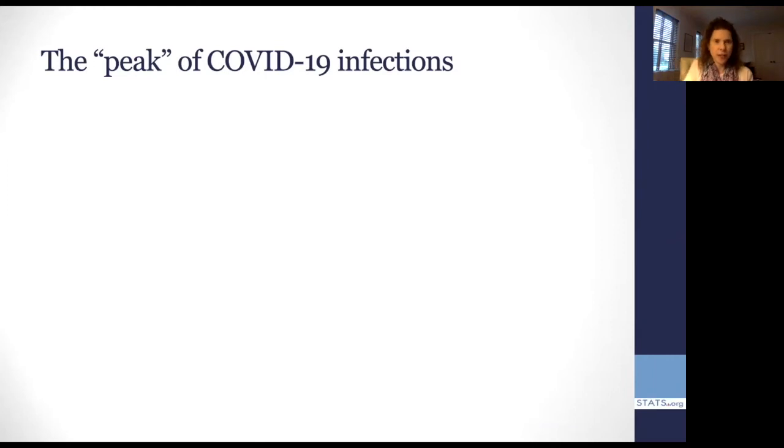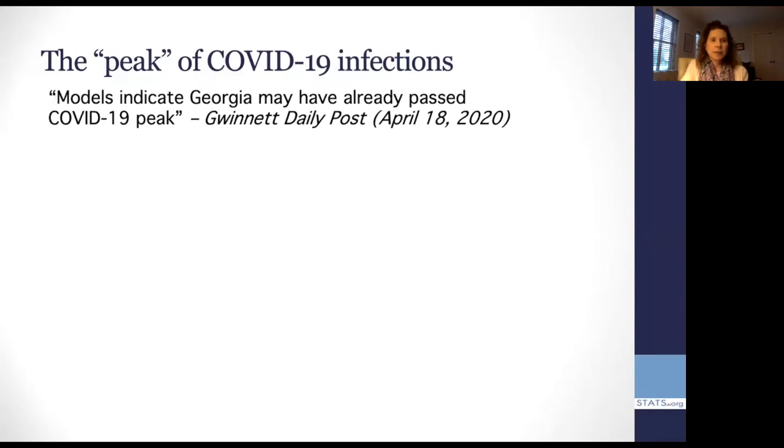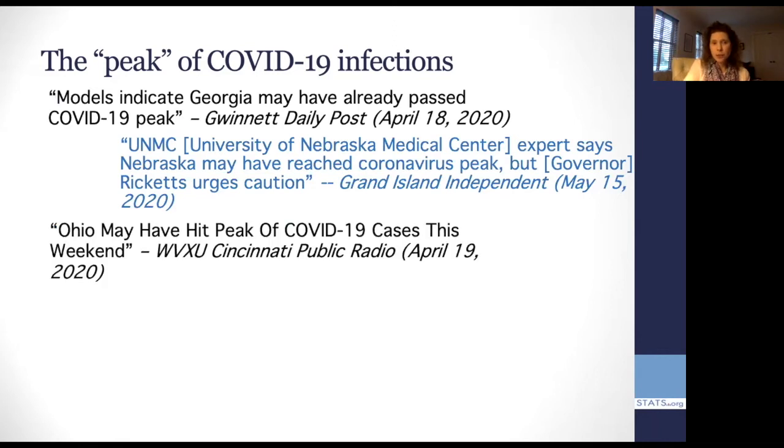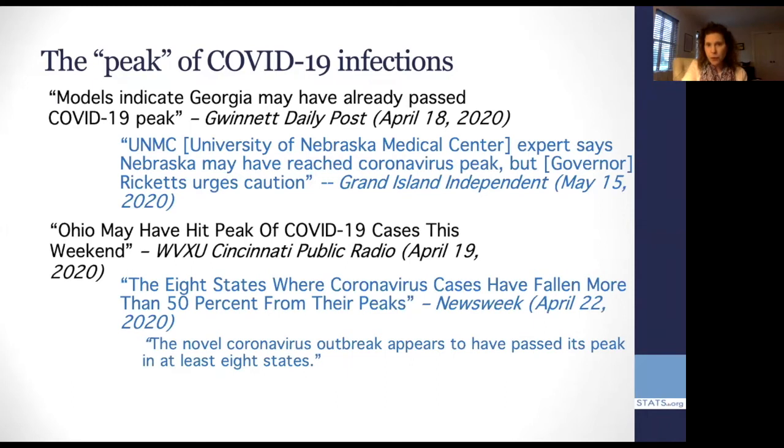So, I'm going to talk about what I think of one of the most pernicious words that occurred in the COVID-19 world of this word peak and how it occurred in the media. Specifically, I'm going to just throw a few quotes up here. Models indicate Georgia may have already passed COVID-19 peak. The University of Nebraska experts say that Nebraska may have reached coronavirus peak, though the governor was urging some caution. Ohio may have hit peak of COVID-19 cases this weekend. These were all from past April. Eight states where coronavirus have fallen more than 50% from their peaks. The novel coronavirus outbreak appears to have passed its peak in at least eight states. So you might get the impression from this language, and I think a lot of people did this past spring, that the word peak was telling us we have a single peak. Everyone has their peak. Every community has a peak and we only need to wait for that peak to occur. And then it's just smooth sailing right after that because, after all, we hit our peak.